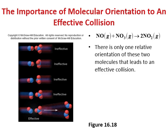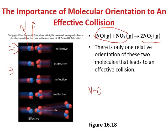This slide shows the importance of molecular orientation when two reactant molecules NO and Cl collide to form NO2Cl. Five diagrams are shown. In diagrams 1 through 4, the orientation does not allow the correct bond to form — the atoms cannot connect properly — so no product is formed. Only certain orientations lead to an effective collision.